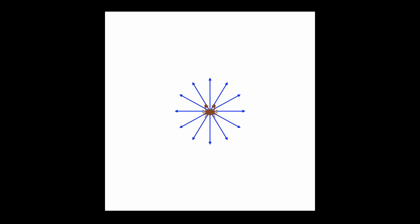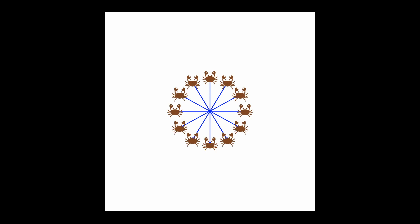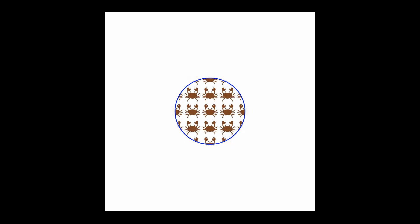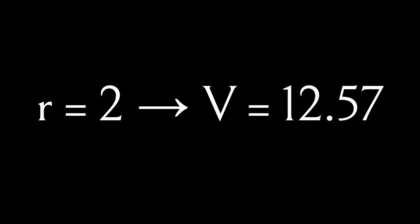What happens if the crab moves two crab lengths in every possible direction? It traces out a larger circle. That looks like nine whole crabs plus a total of maybe three and a half bits of a crab — I'm going to call it 12.57 crabs. So by moving two crab lengths in every possible direction, our crab finds that it has covered 12.57 crabs worth of space. In other words, r equals 2 gives us v equals 12.57.